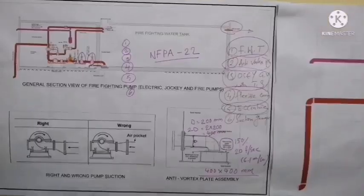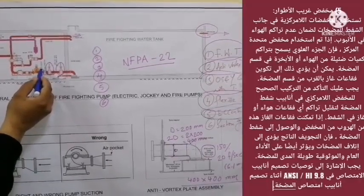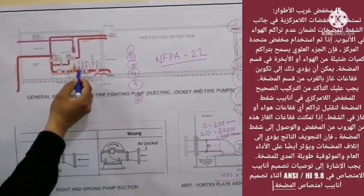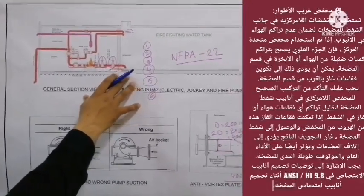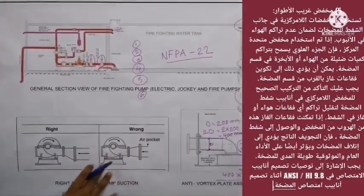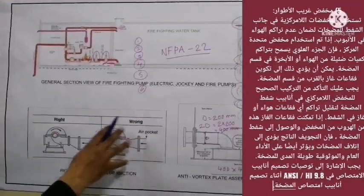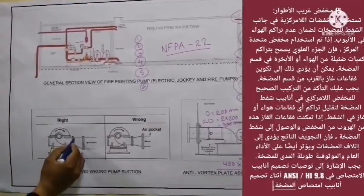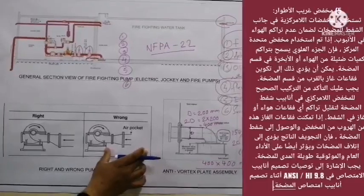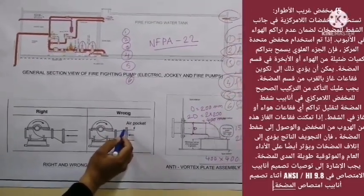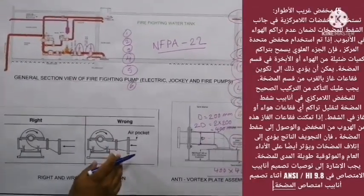Now let's discuss point number five — the eccentric reducer. You can have a look at the location of the eccentric reducer, which is installed before the flexible connection. Eccentric reducers are used at the suction side of a pump to ensure that air does not accumulate in the pipe. You can see clearly the difference between right and wrong suction installation. If concentric reducers are used instead, the upper part allows accumulation of trace amounts of air or vapor in the pump suction, which can lead to creation of gas bubbles near the pump suction.